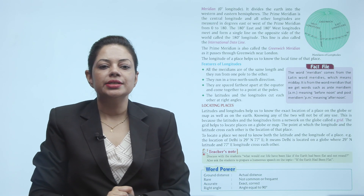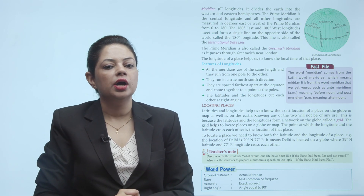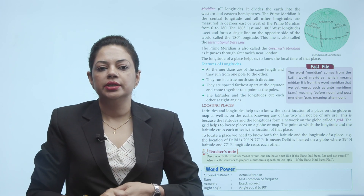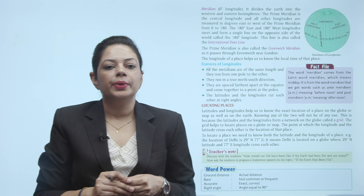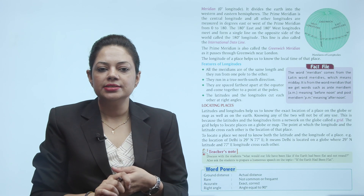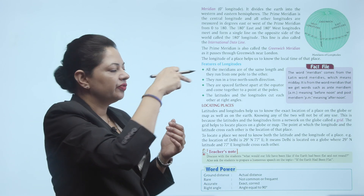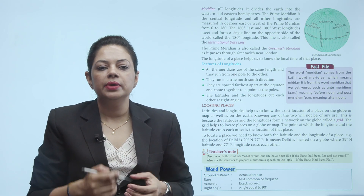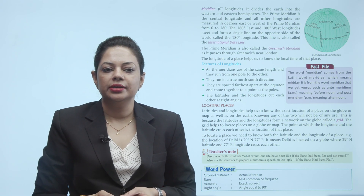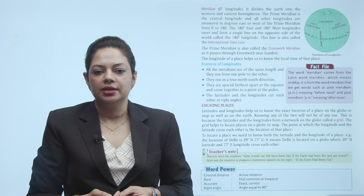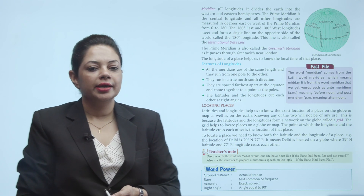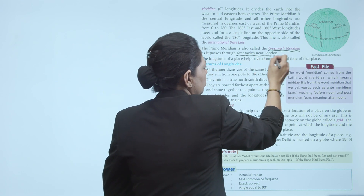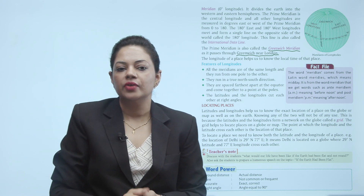It divides the Earth into western and eastern hemispheres — just as the equator divides Earth into northern and southern hemispheres. The 180 degree east and 180 degree west longitude meet and form a single line on the opposite side of the world, called the 180 degree longitude — this line is also called the International Date Line. The prime meridian is also called the Greenwich Meridian as it passes through Greenwich, near London.